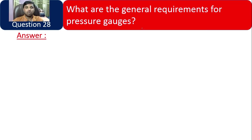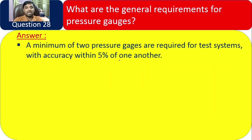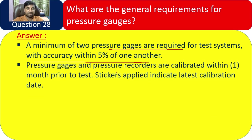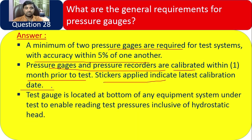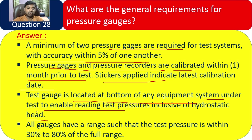Question 28: What are the general requirements for pressure gauges? A minimum of two pressure gauges are required for the test system, with accuracy within 5% of one another. Prior to starting the test, pressure gauges and pressure recorders are calibrated within one month, and stickers applied indicating the latest calibration date. The test gauge is located at the bottom of any equipment system under test to enable reading and include the hydrostatic height. All gauges shall have a range such that the test pressure is within 30 to 80% of the full range.